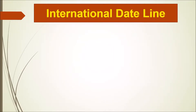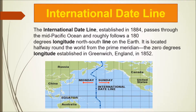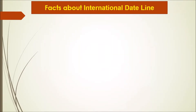The international date line, established in 1884, passes through the mid-Pacific Ocean and roughly follows the 180 degrees longitude north-south line on the Earth. It is located halfway around the world from the prime meridian, which is at zero degrees longitude.